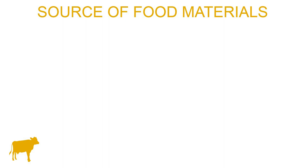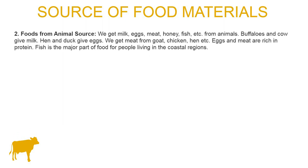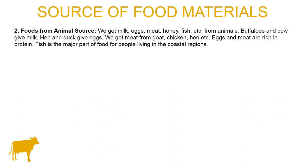The next source is the animal source — the food which we get from animals. We get milk, eggs, meat, honey, fish, etc. from animals. Buffaloes and cows give milk; hen and duck give eggs. We get meat from goat, chicken, hen, etc. Eggs and meat are rich in protein.